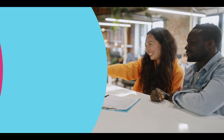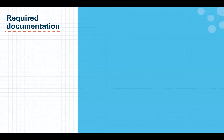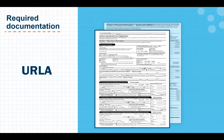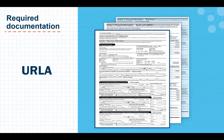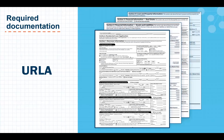Where do we start? Like all loan requests, the review process starts with the borrower's loan application. Many times, this is the first time we realize that we have a self-employed borrower, because in the employment section of the URLA, the borrower has indicated that they have an ownership interest in a business.